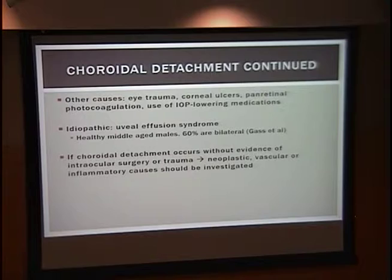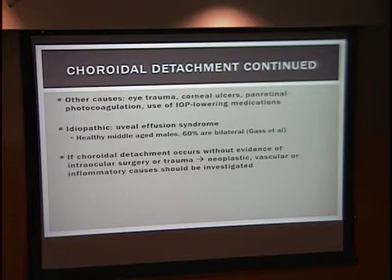Other causes not surgically related include eye trauma, corneal ulcers, PRP, and the use of IOP-lowering medications. If it occurs idiopathically, it can be termed uveal effusion syndrome, which prototypically happens in healthy middle-aged males and is majority bilateral. If choroidal detachment occurs without evidence of intraocular surgery or trauma, you would want to investigate neoplastic, vascular, and inflammatory causes.